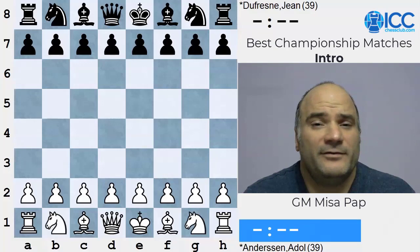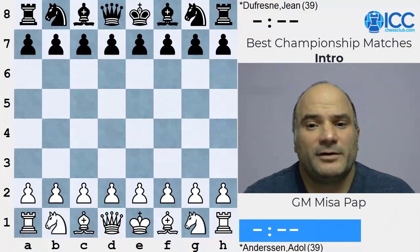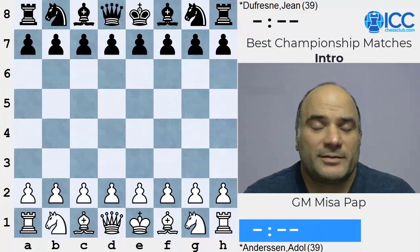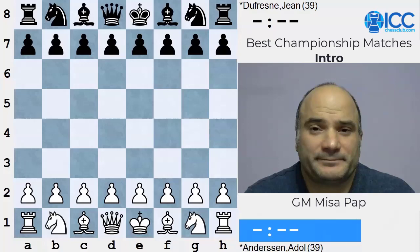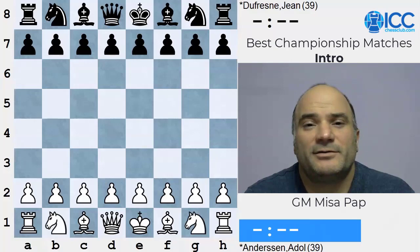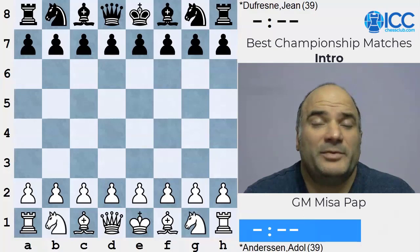In the 1840s, the world's best player was considered to be the famous Howard Staunton. He won a famous match against Saint-Amant in 1843, which was played in London. He won that match convincingly, 11-6 with four draws. Howard Staunton was considered the best player of that era up until the first international chess tournament, which was held in London in 1851.